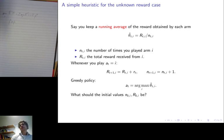So before we do this complicated idea, let's talk about simple heuristics for the unknown reward case. Say you keep a running average of the reward obtained by each arm. So θ̂ᵢ is the average reward you obtained, where nᵢ is the number of times you played arm i, and rᵢ is the total reward you get from this arm. So whenever you play this arm, you increase the reward that you have stored for the arm by the reward you get. And you increase the number of times you have played the arm by one. Then you can select the policy that selects the arm that maximizes this estimated reward at the next step.